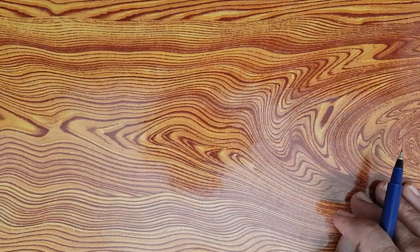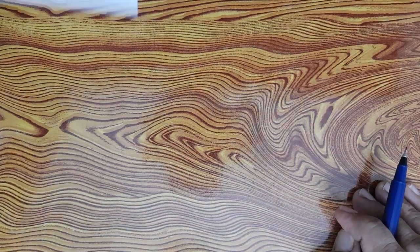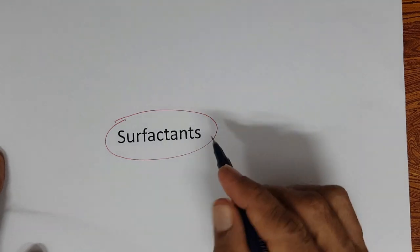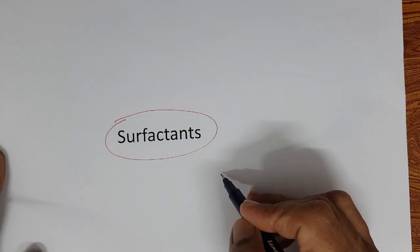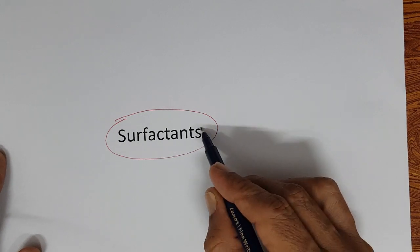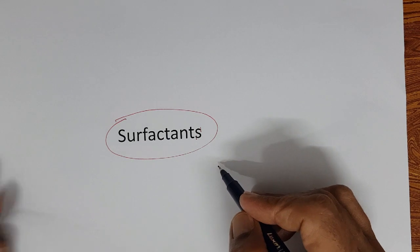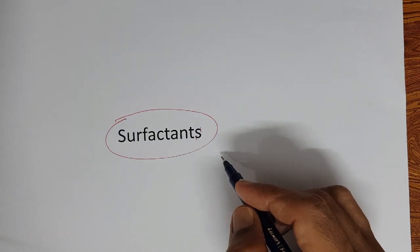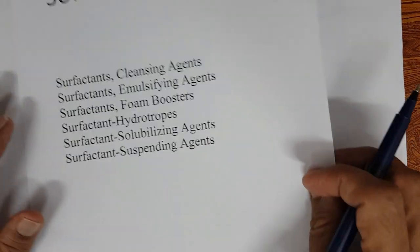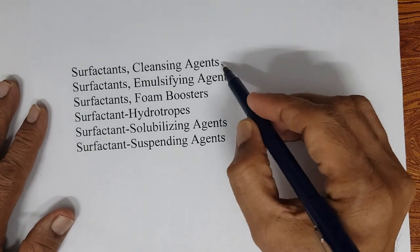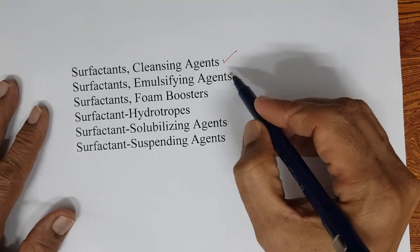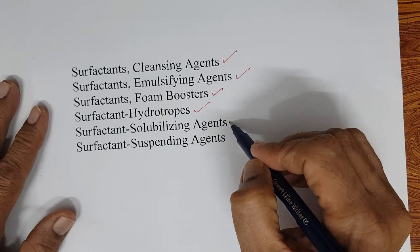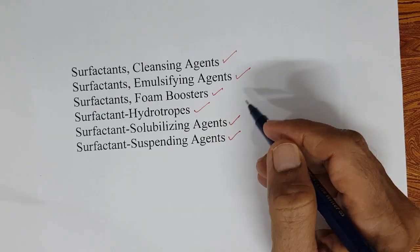Now, surfactants. Surfactants are an important group of ingredients used in cosmetic products, and they are a very important building block in formulation of various cosmetics and personal care products. Surfactants have various functions: cleansing agent, emulsifying agent, foam booster, hydrotrope, solubilizing agent, and suspending agent.